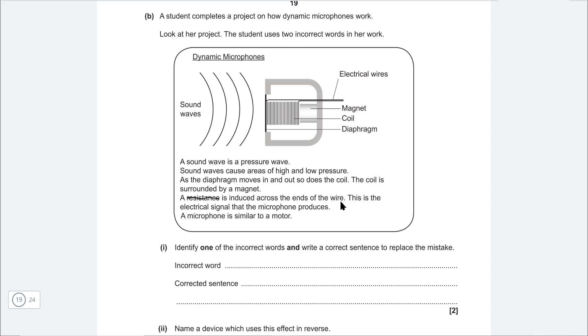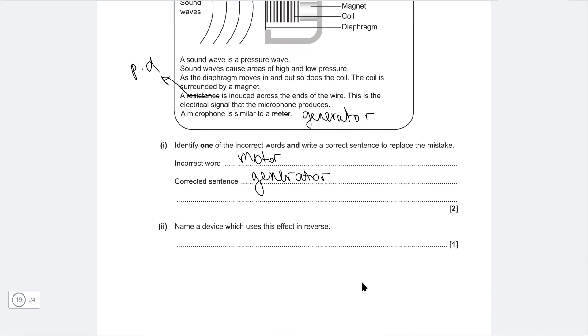Now I'm just going to correct them here, but the incorrect word is resistance. So we can't really induce resistance, but we can induce voltage or potential difference. So I'm going to change that to PD. Now additionally, if we keep on reading, it says a microphone is similar to a motor. Well, that is not true because what a microphone does is it takes in kinetic energy, the energy of sound, the pressure wave energy, and it converts that to an electrical signal. So it's much more similar to a generator. So our incorrect word is motor, which we can replace with generator. We could also have written resistance here for the incorrect word. If we've done that, we would have written potential difference or voltage. Okay, name a device which uses this effect in reverse. Well, this here is a speaker.